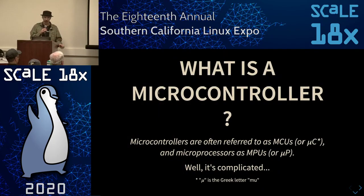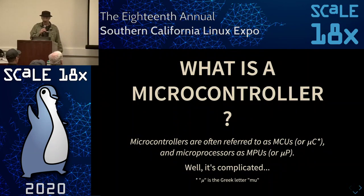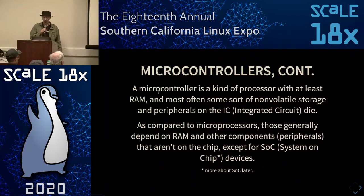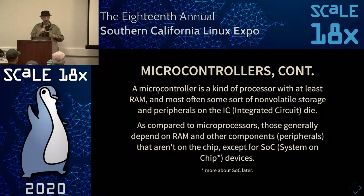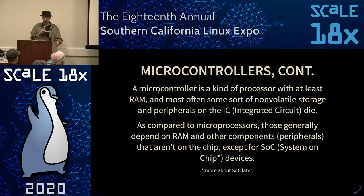What is a microcontroller? A microcontroller is often referred to as an MCU — fewer syllables — or the little µC symbol. Microprocessors are MPUs. Generally microcontrollers have less RAM, less of everything except I/O, and generally have some kind of storage right on the die. Microprocessors use RAM that's off the die — you put your RAM SIMMs in. Then we get into SOCs, system on chips, which have what you'd normally find in a desktop computer jammed into one package.